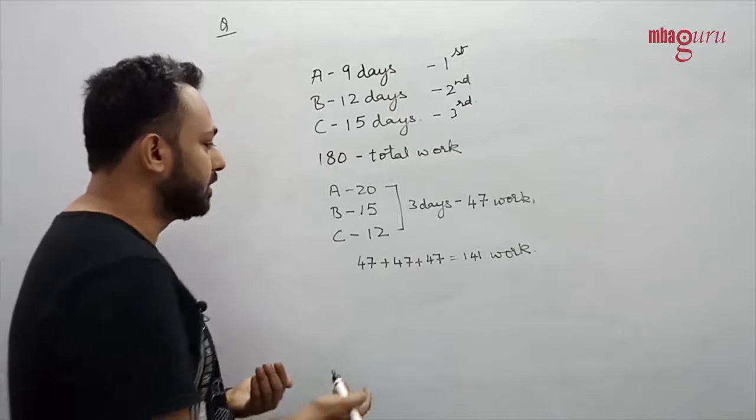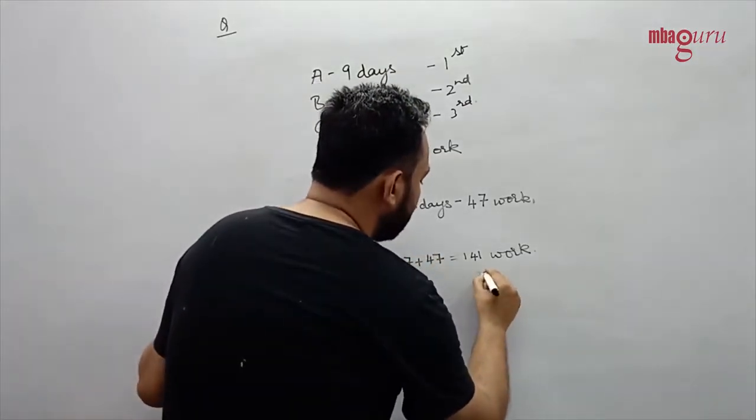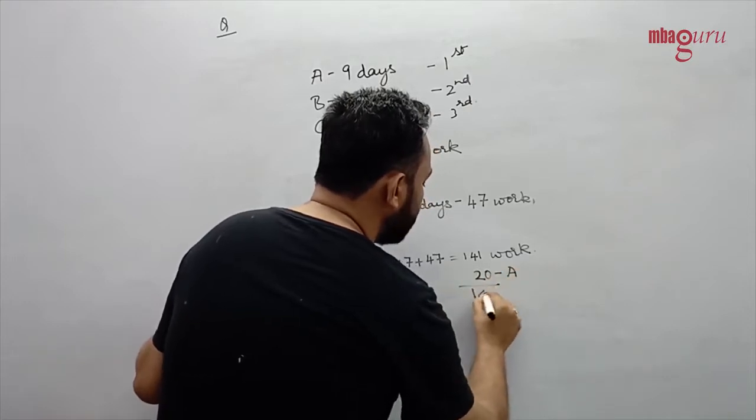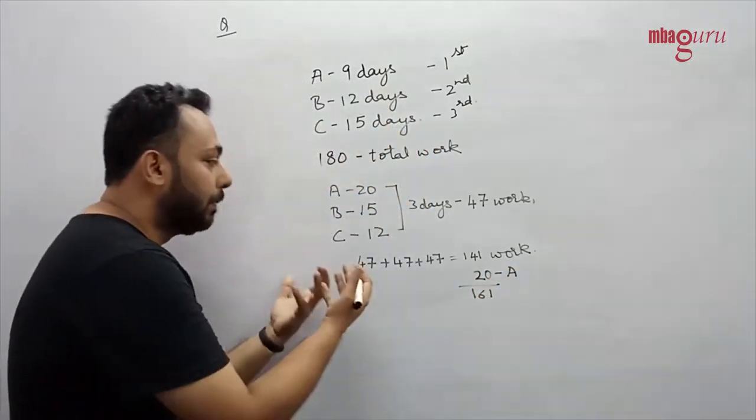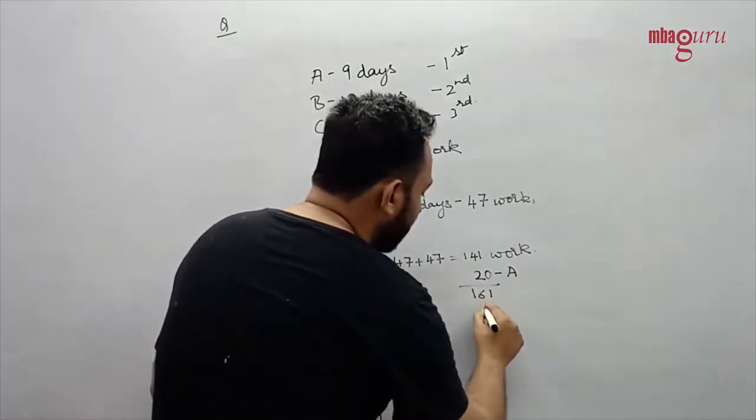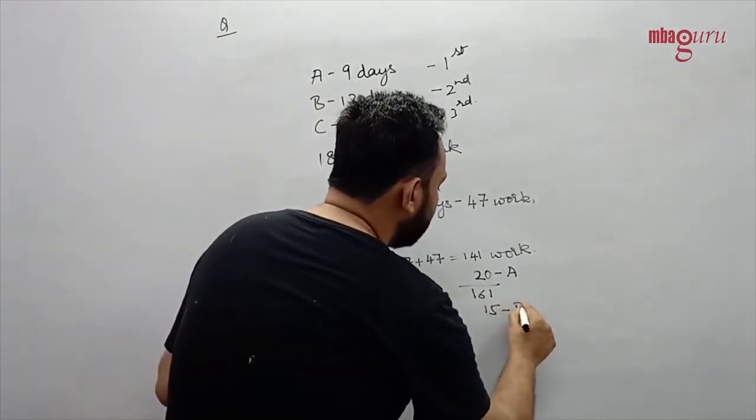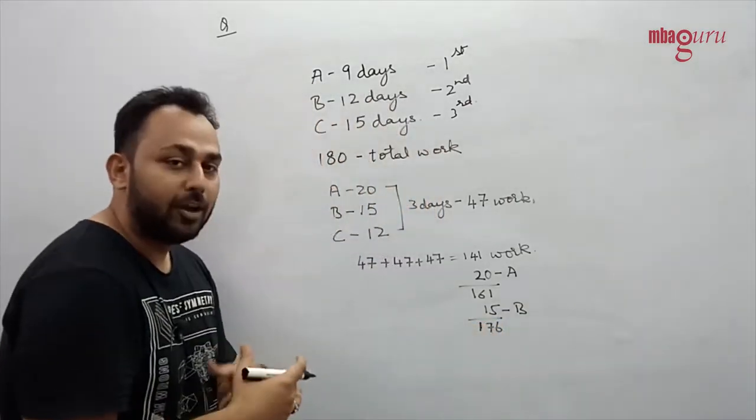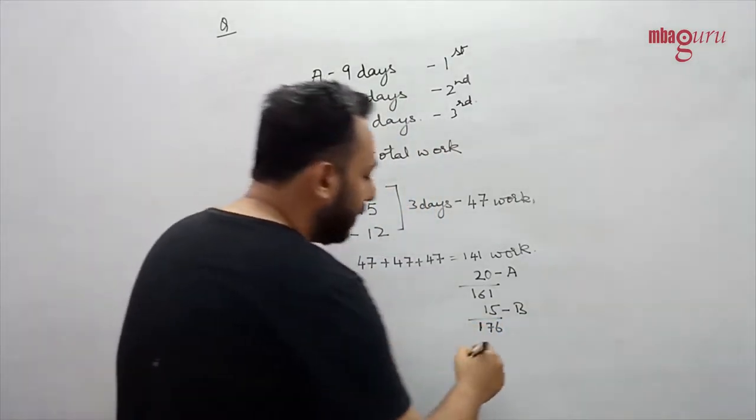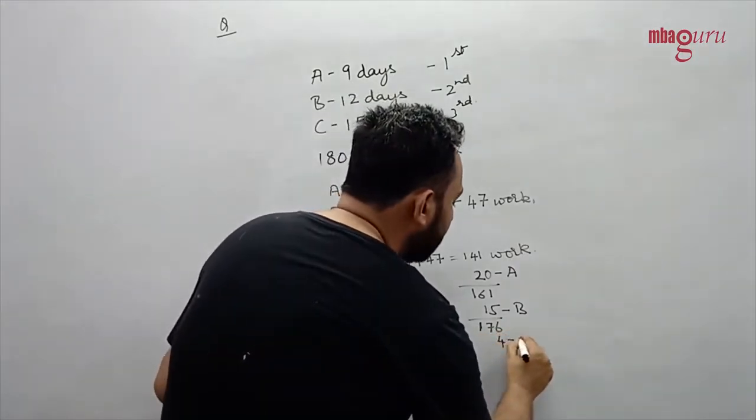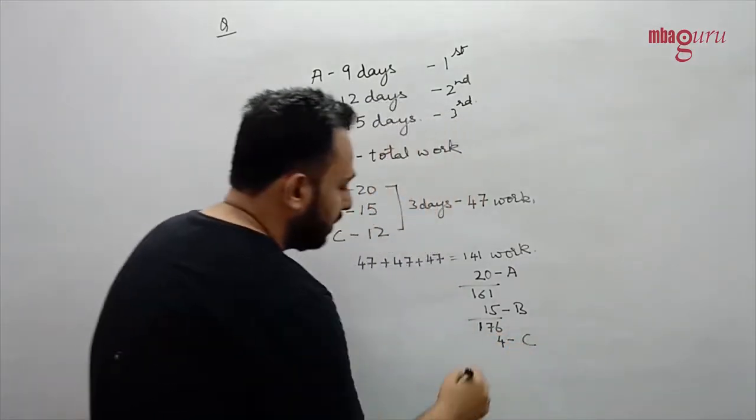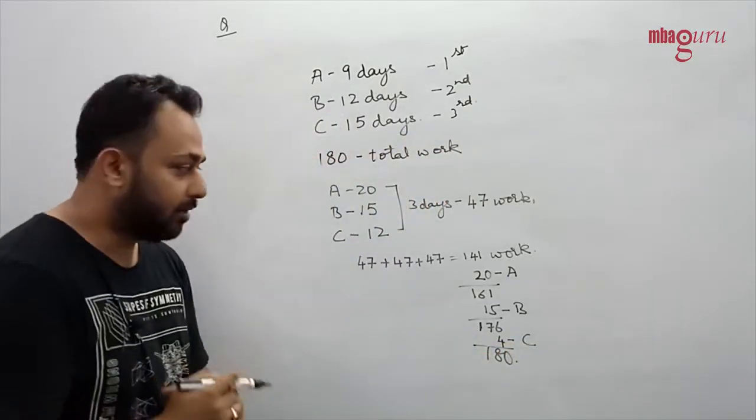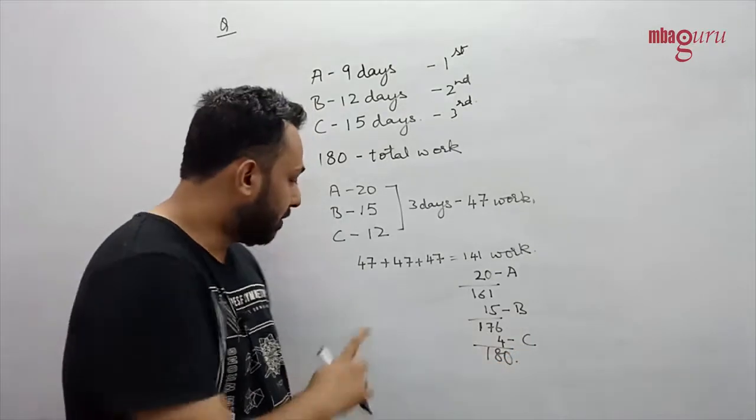The next day who comes into work is A and he would do 20 work. Now 161 work has been done. Next day B would come into work, B will do 15 work and 176 units of work have been done. And on the last day C would come in but he would only do 4 units of work and our total work of 180 would be done.